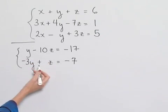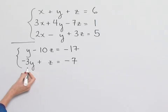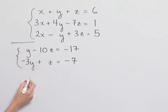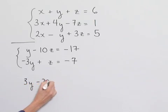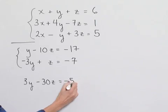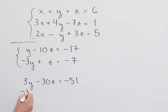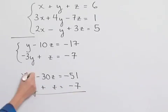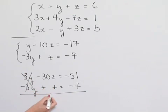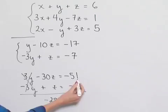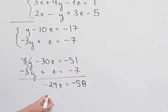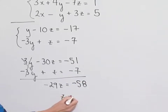I've rewritten the two equation, two unknown system here to work with it. We notice that we can eliminate the y values if we multiply the first equation by three. So we rewrite the first equation as three y minus thirty z equals negative fifty-one. We rewrite the second equation as is and combine. The y's are eliminated. We end up with negative thirty z plus z, which is negative twenty-nine z, equals negative fifty-one plus negative seven, which is negative fifty-eight.